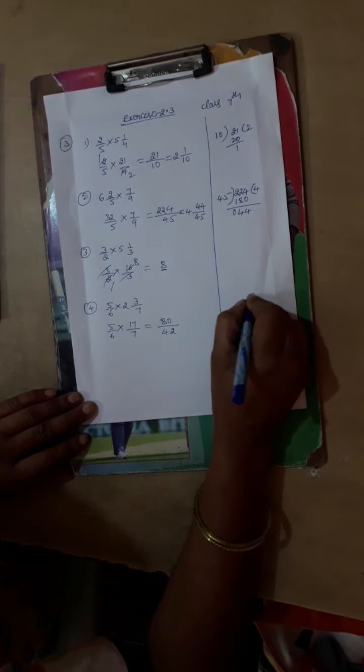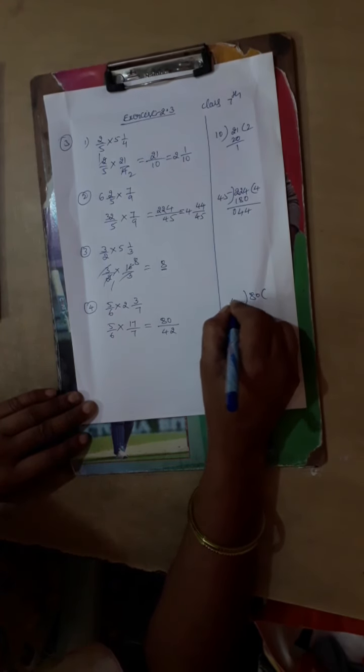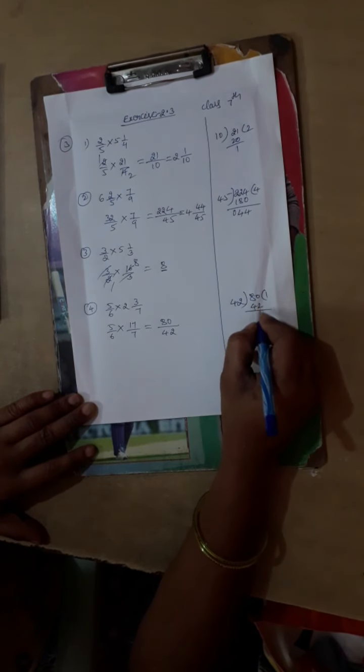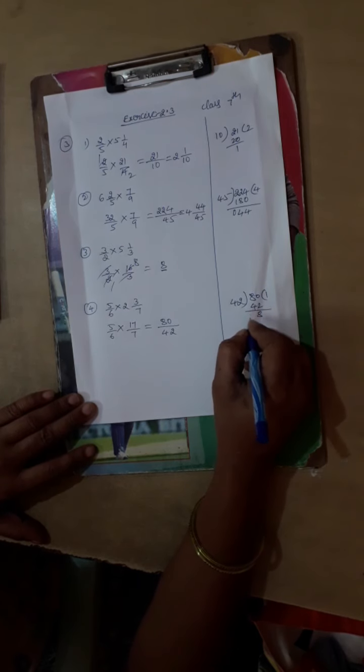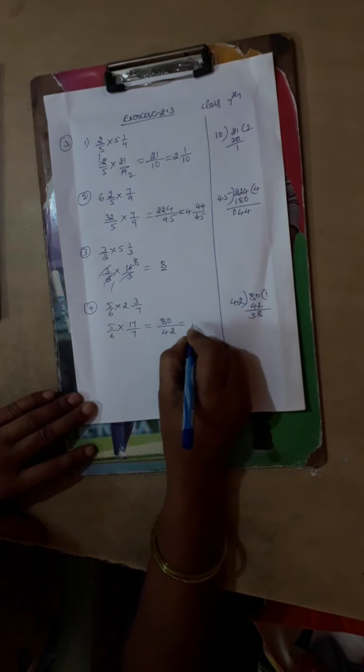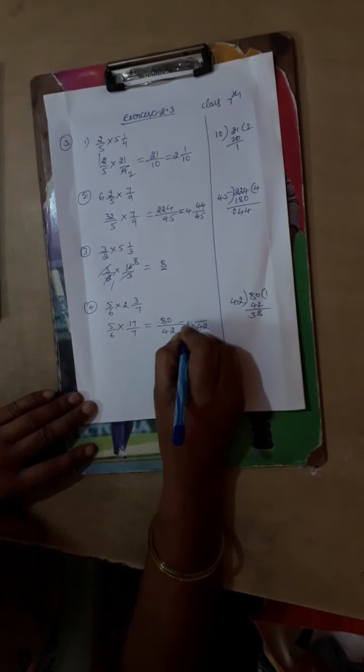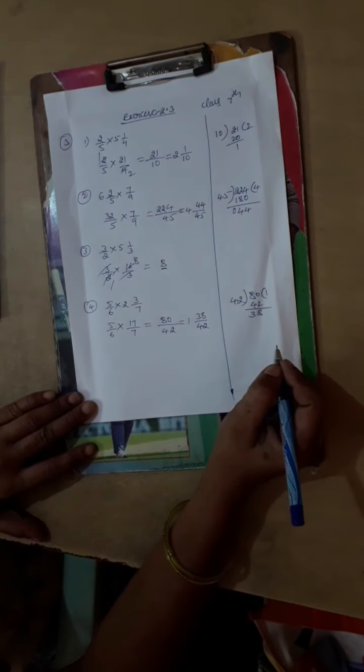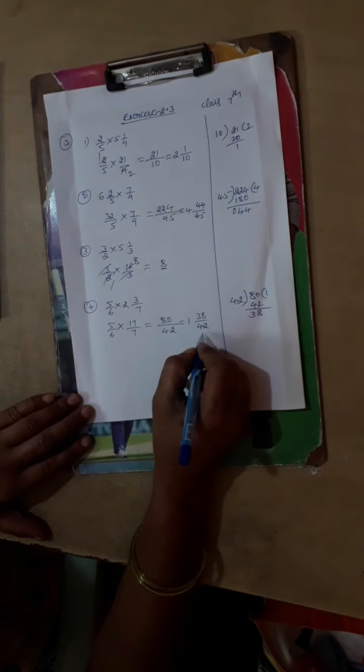So let us divide this 85 by 42. So you will get 42 times 1 is 42, then 10 minus 2 is 8, 7 minus 4 is 3. So which is equal to 42, so 1, then the remainder will become in the numerator: 1 38 divided by 42.